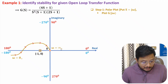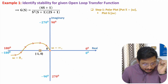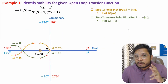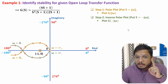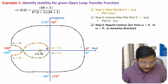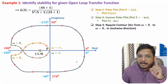In the second step we plot the inverse polar plot, which is the exact replica with respect to the real axis, where s equals minus j omega. In the third step we have the Nyquist contour, going from omega equals 0 minus to omega equals 0 plus in the clockwise direction, with radius that is infinite.